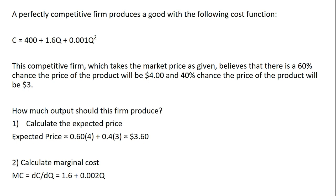Next, we want to calculate marginal cost. We go to the cost function and take the derivative of it. The derivative of 400, or a constant, is 0. The derivative of 1.6Q is just 1.6. And the derivative of this last term, we just bring down the two in front, so 2 times 0.001 is 0.002Q. So we have the marginal cost equation down below then.